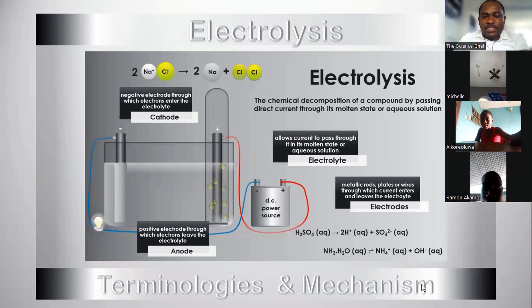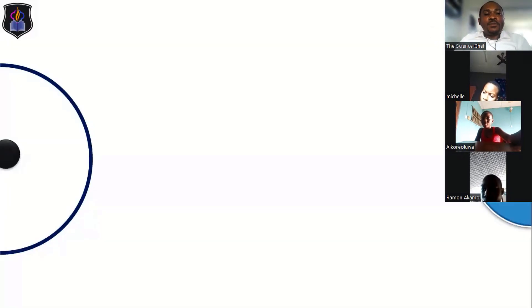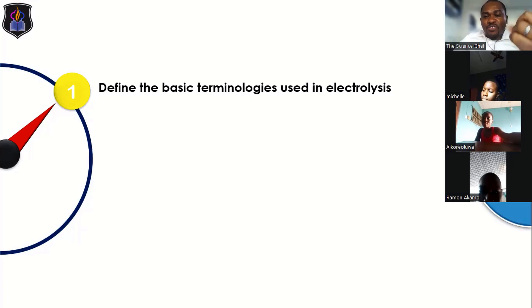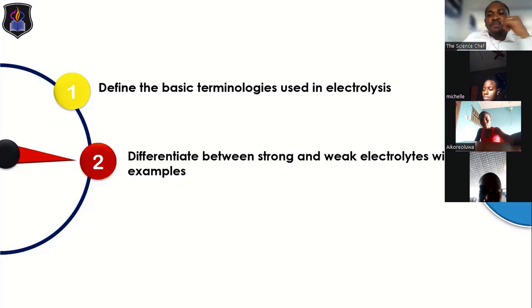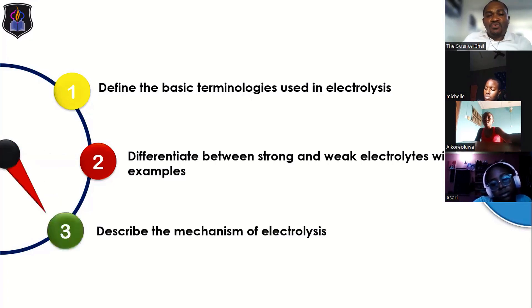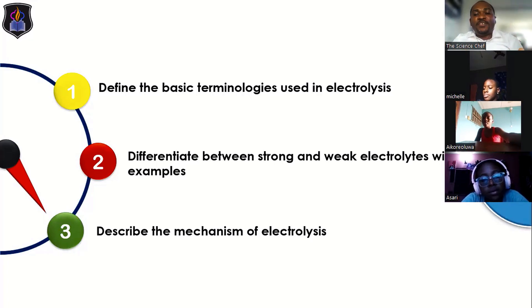The objectives for Part 1 are: one, you should be able to define the basic terminologies used in electrolysis — electrolysis itself, electrolytes, electrodes, cathode, and anode. Two, you should be able to differentiate between strong and weak electrolytes with examples. Three, you should be able to describe the mechanism of electrolysis. At the end of this part, I will evaluate you on these objectives.